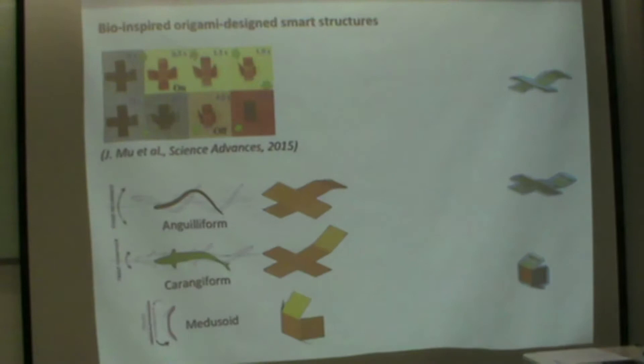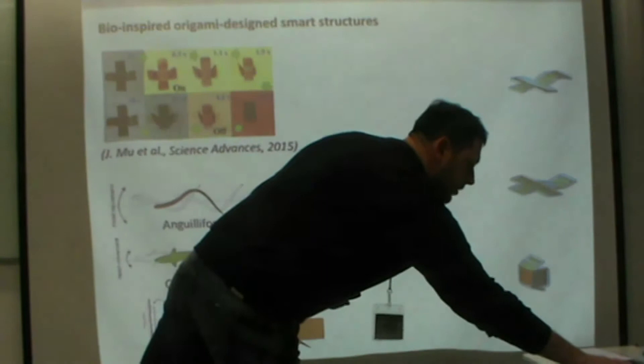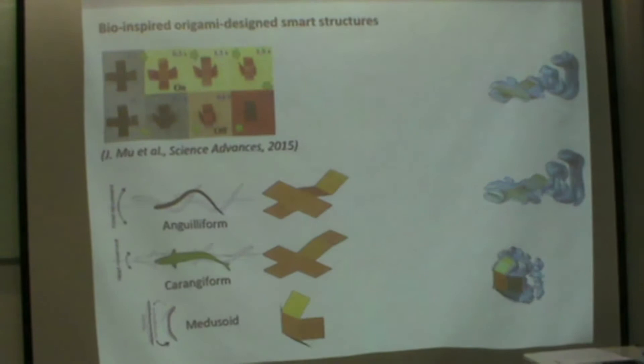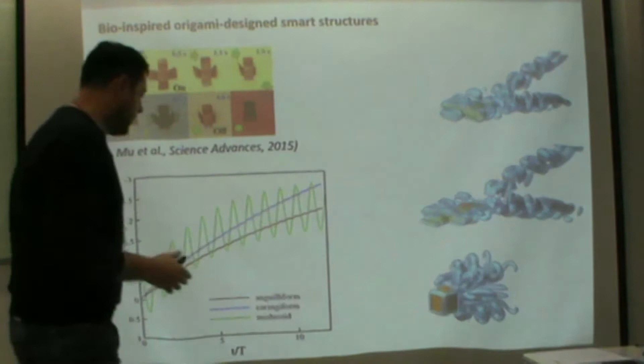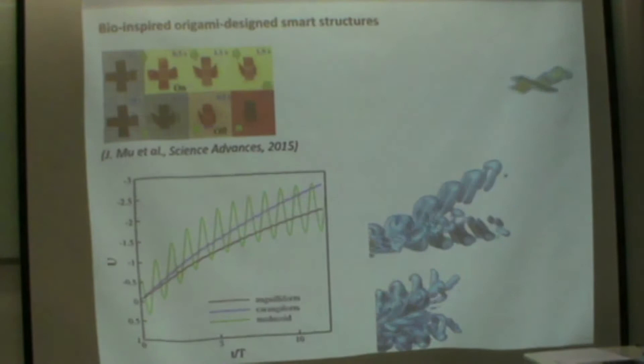This is a bio-inspired origami designed structure, a cube that is unfolding. We can mimic anguilliform, carangiform, or medusoid motion depending on how we move the faces. We can run simulations with FSI, evaluate the vortical structures downstream of different models, and evaluate velocity and forces in the forward direction depending on the case, looking which one is better in different situations depending on the Reynolds number.